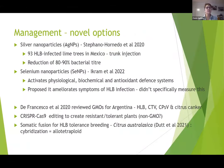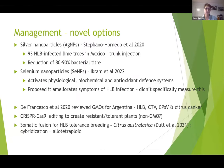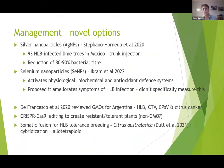Some novel options for management: silver nanoparticles have been looked at recently, not just for HLB but for other bacterial diseases. Silver is a really good antibacterial, and trunk injection was found to be more effective, reducing bacterial titer significantly. Other researchers are looking at combining silver nanoparticles with things like amino acids to get better uptake into plants — that's a really interesting area and we're sure to see more about it in the next few years.